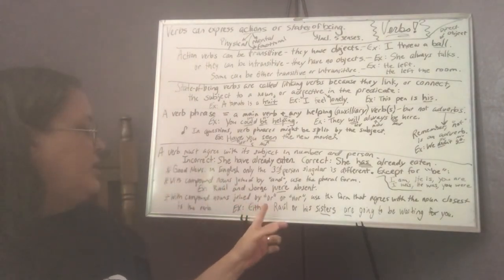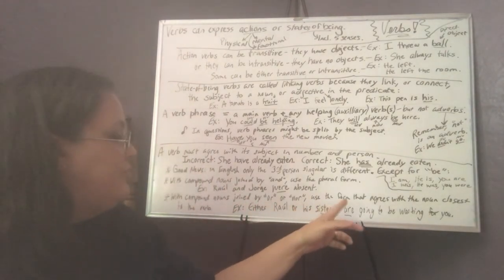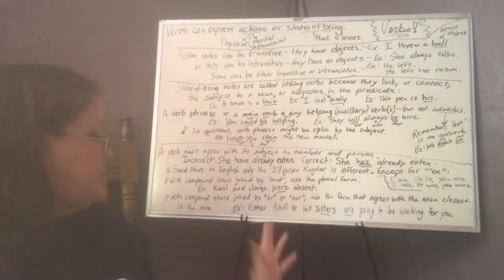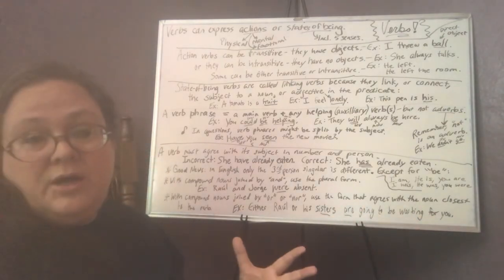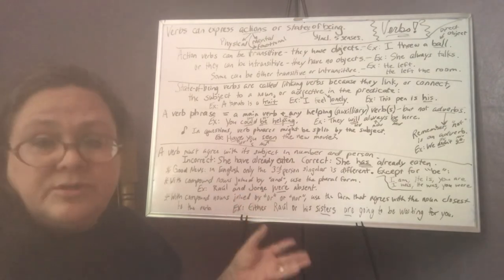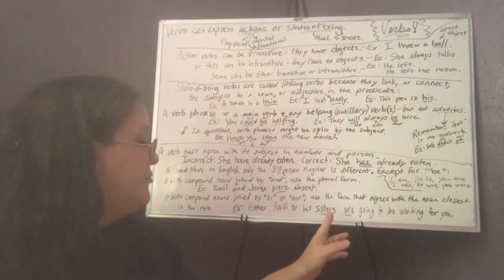With compound nouns joined by or or nor, use the form that agrees with the noun closest to the verb. So in this sentence, either Raul or his sisters are going to be waiting for you. So I don't know whether it's going to be Raul or his sisters, but we need the plural verb because of the word sisters.